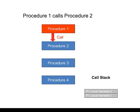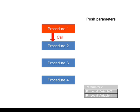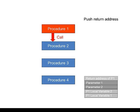So what happens when Procedure 1 calls Procedure 2? First of all, any parameters which Procedure 2 is expecting are pushed onto the stack. They are pushed onto the stack in the reverse order to which they were declared in Procedure 2's parameter list. Next, the return address of Procedure 1 is pushed onto the stack. This comes from the CPU's program counter, and it will be used later to return control back to Procedure 1 when Procedure 2 is finished. It's sometimes called the instruction pointer.